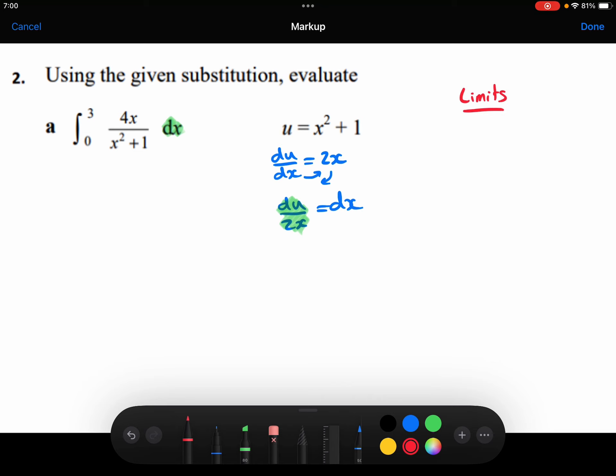So my upper limit was when x was 3. So in that case, u would be equal to 3 squared plus 1, which is 10. So my upper limit for u is 10.